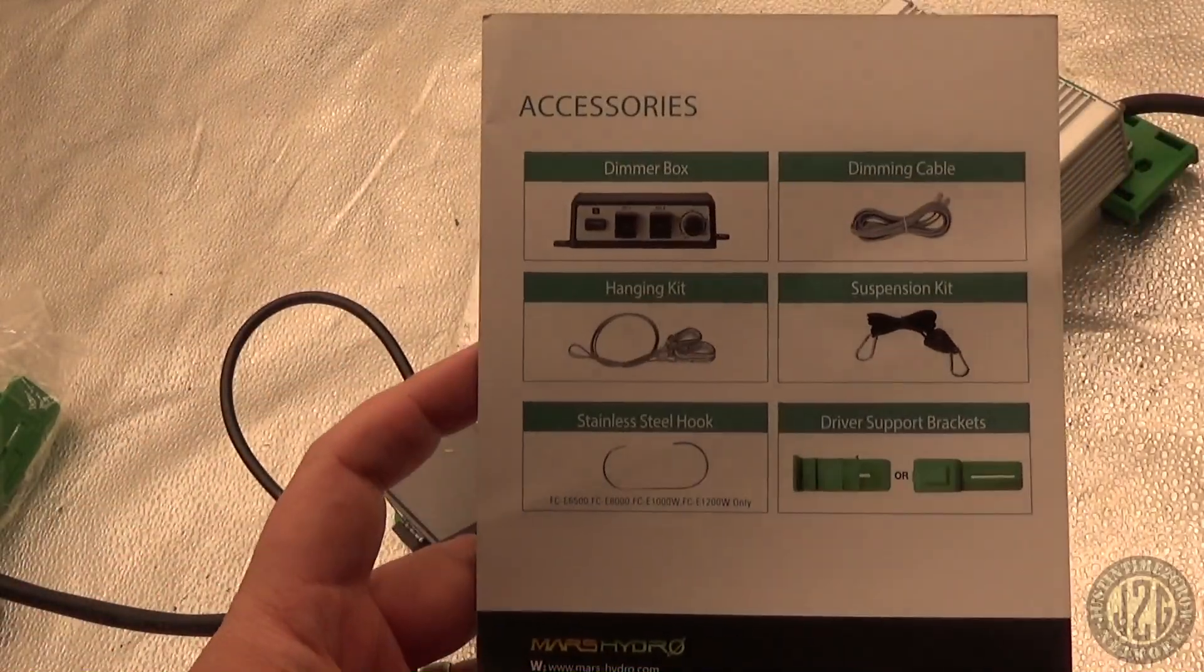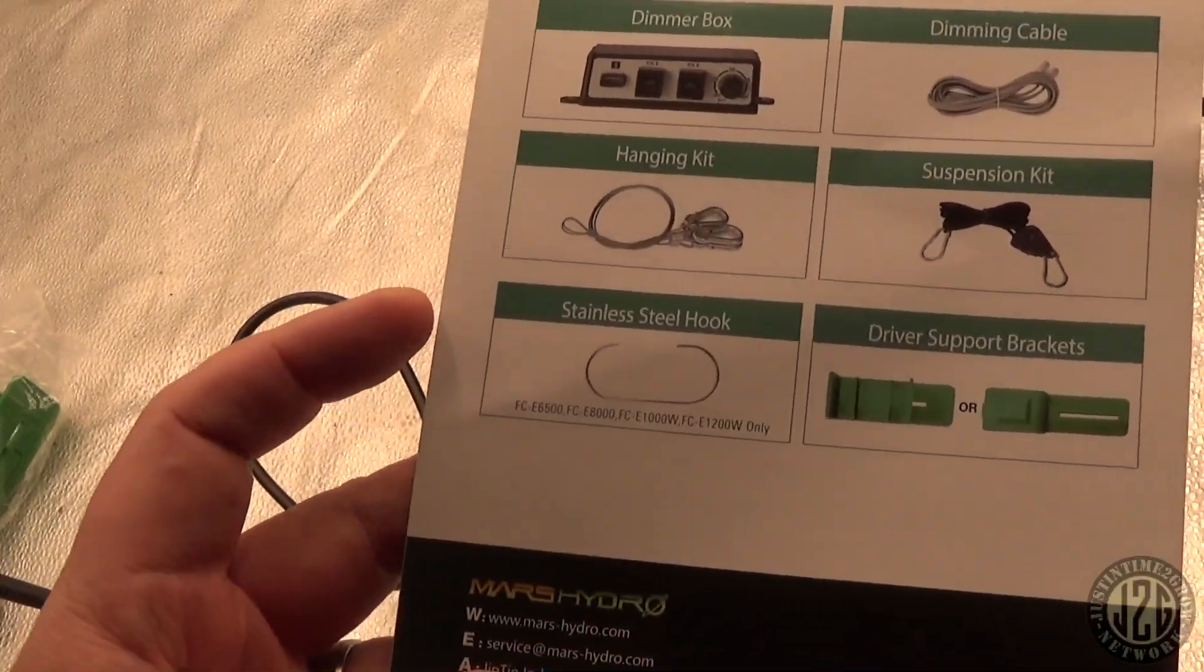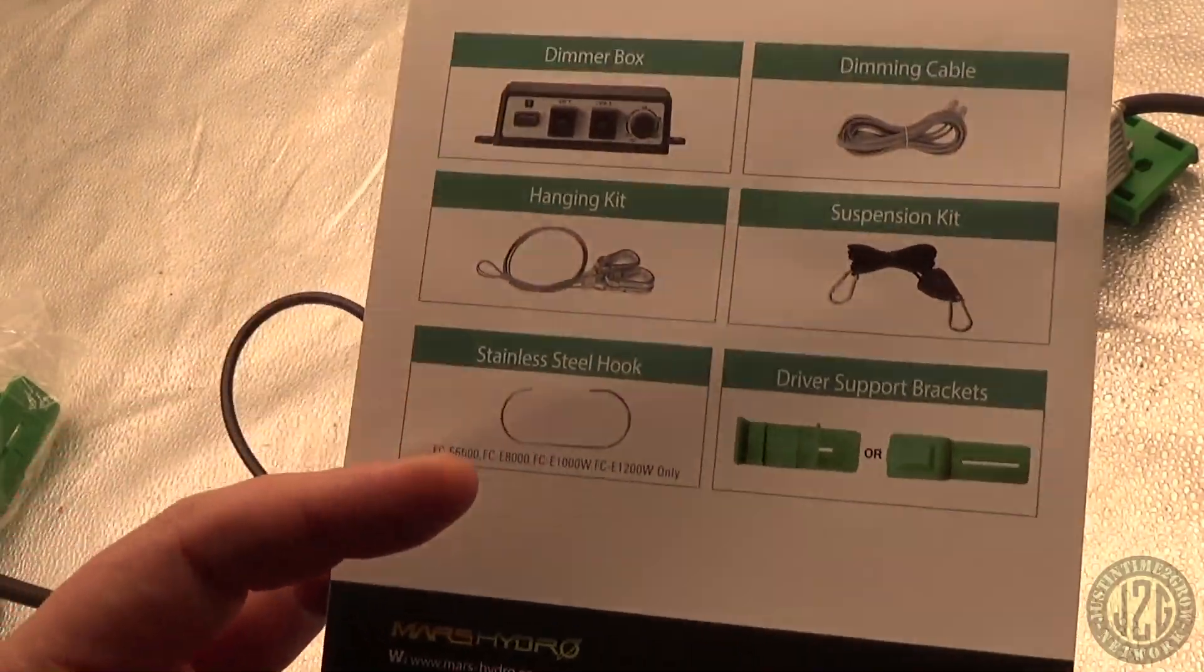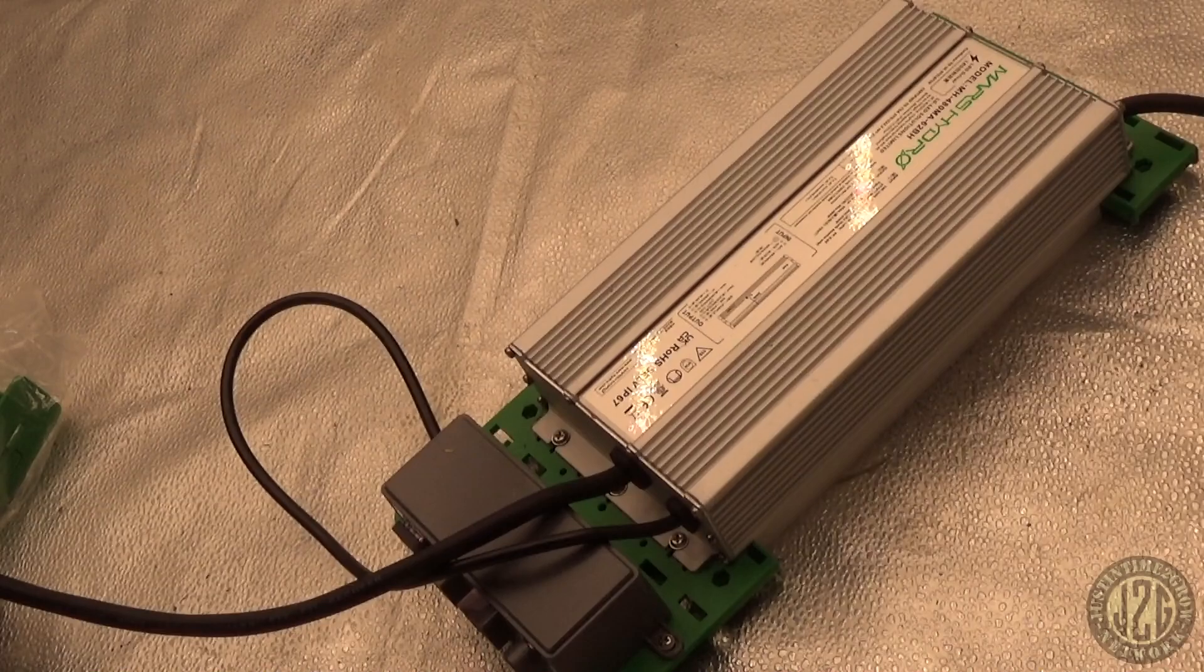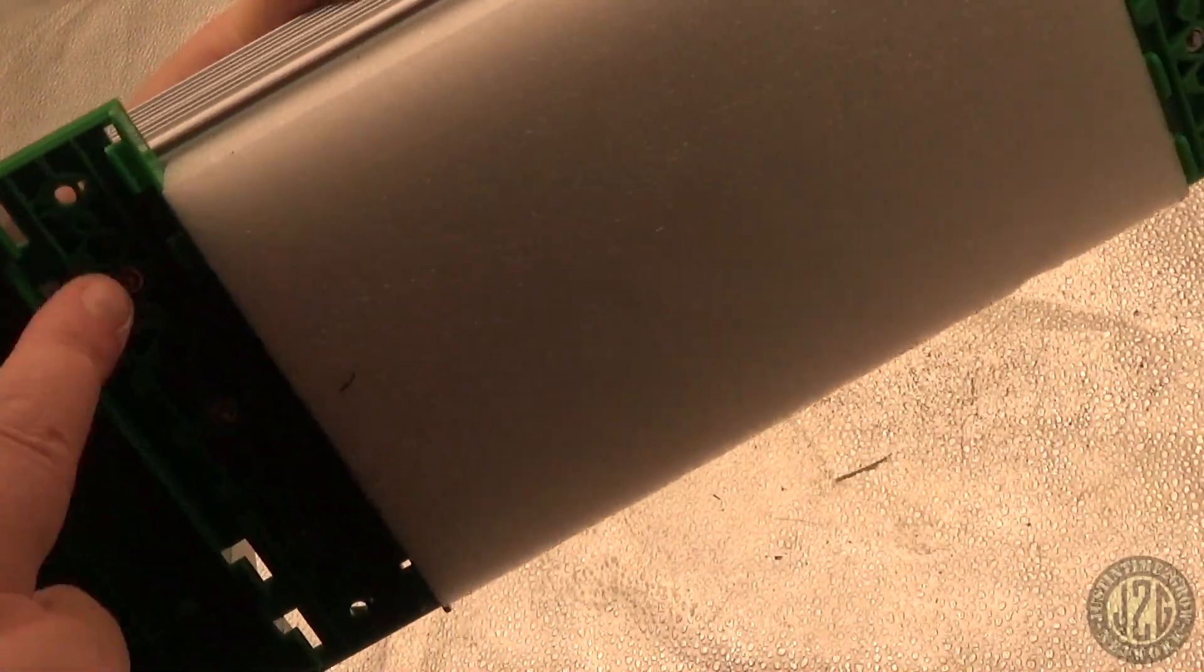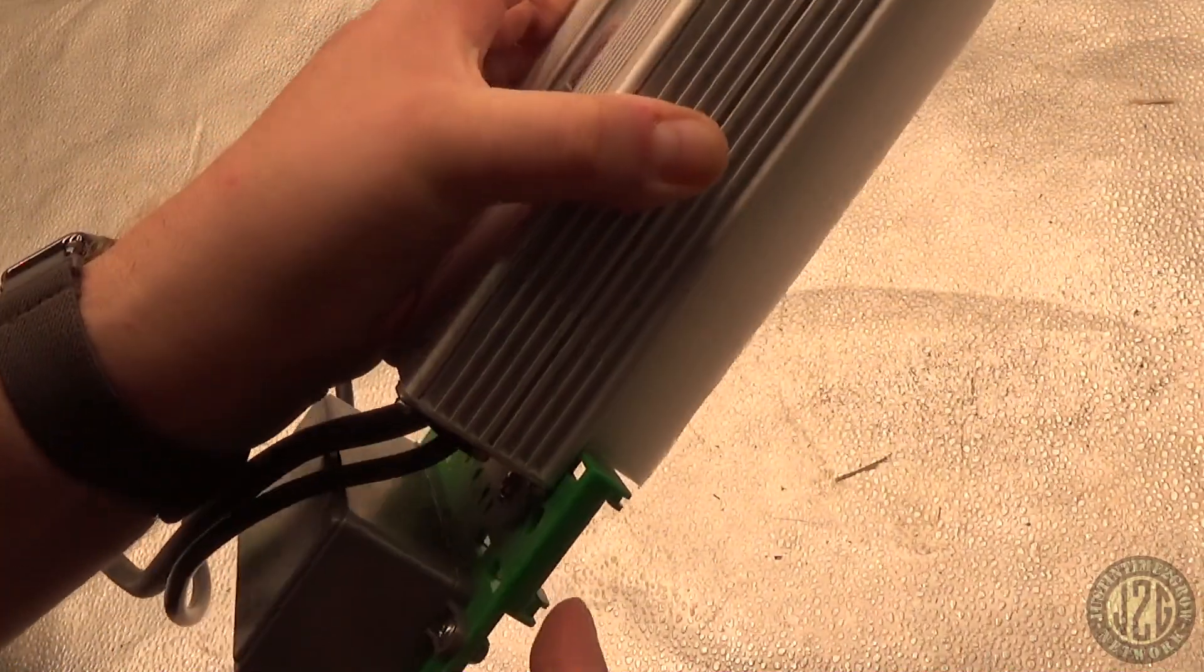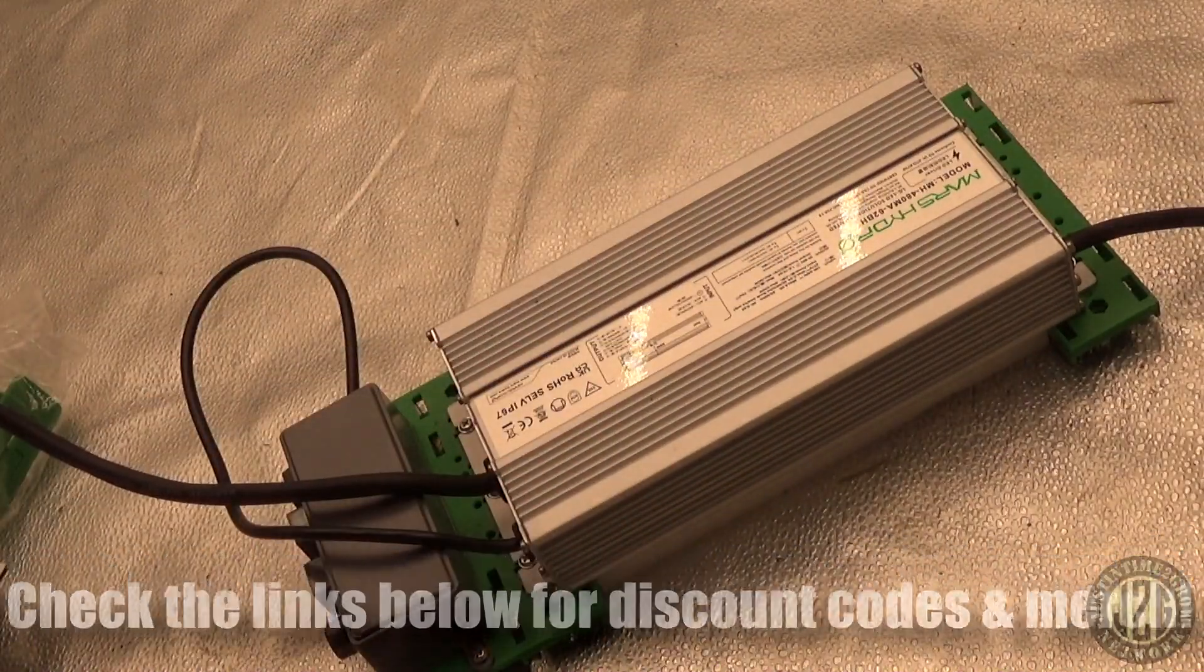Then it tells you what comes with it: you got the dimmer box, the cable, all the stuff I just went over. The stainless steel hook is only for the bigger models. That's used to actually hang the driver in the tent if you want to do that. You can do that with this just the way it is because it does have some holes here. You could just use a rope ratchet to do that and then just hang it in the tent.